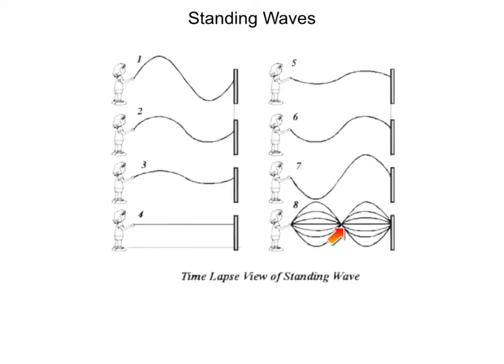The parts where the string doesn't move at all, like right there, right there, right there, those are called nodes. And the parts where the string undergoes a whole lot of motion, those are called antinodes.